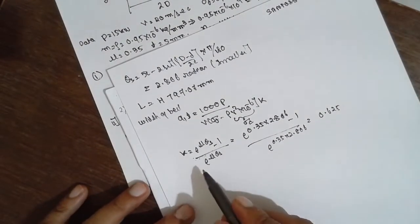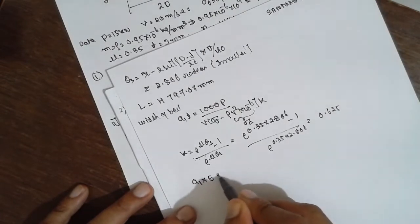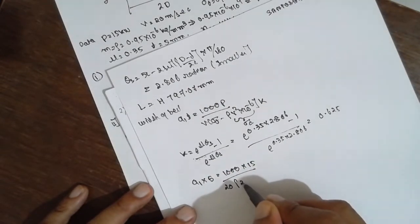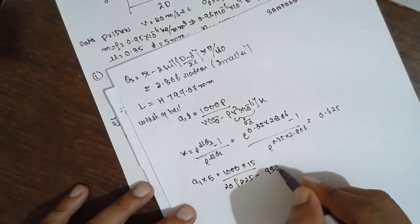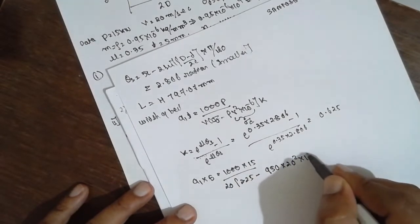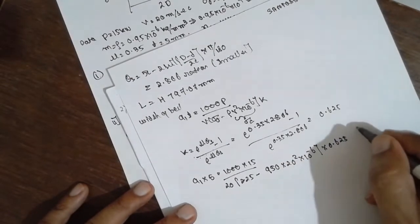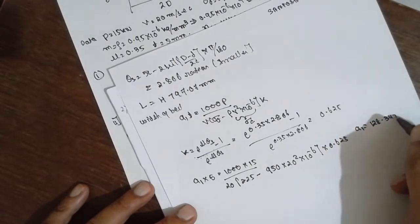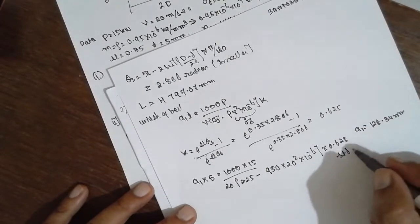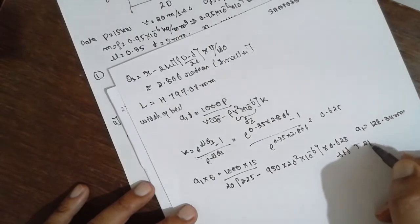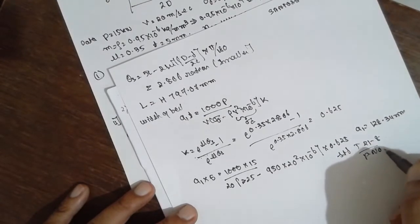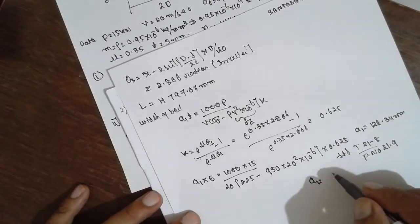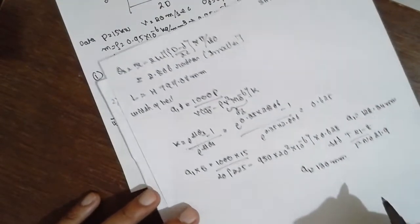Substituting all values: a1 × 5 = 1000 × 15 / (20 × (2.25 − 950 × 20² × 10⁻⁶) × 0.625). Solving, a1 = 1280.34 mm. As per the standard table 21.8 on page 21.9, the standard value of belt width is 130 mm.